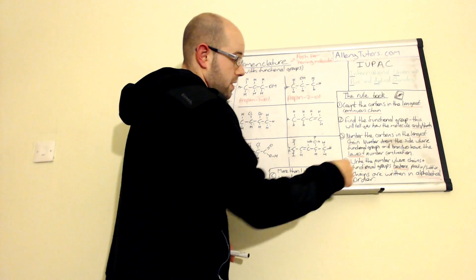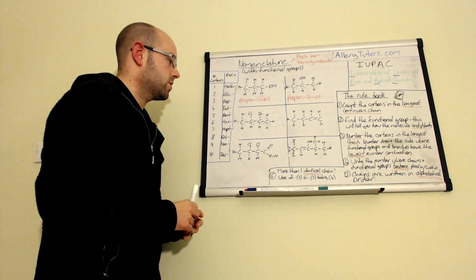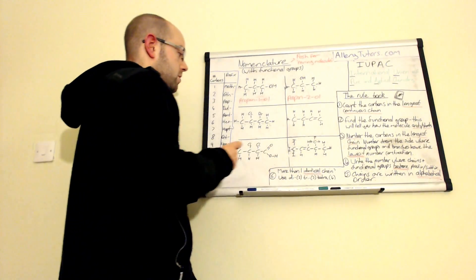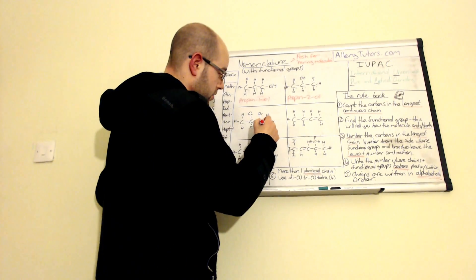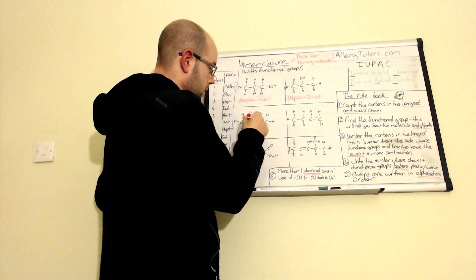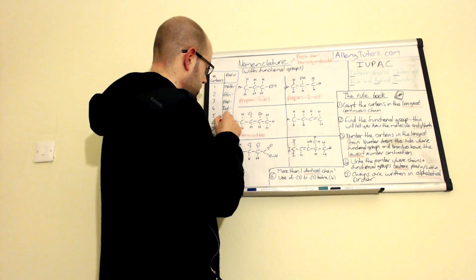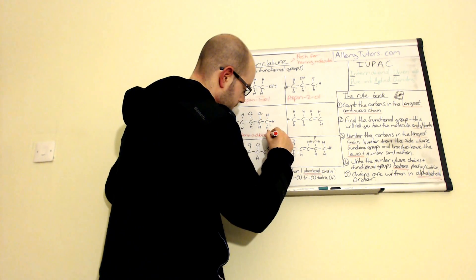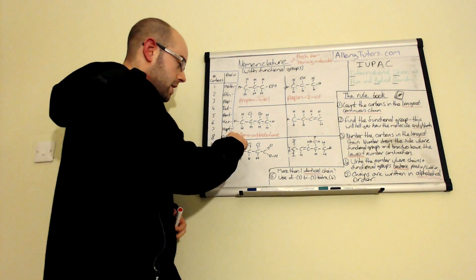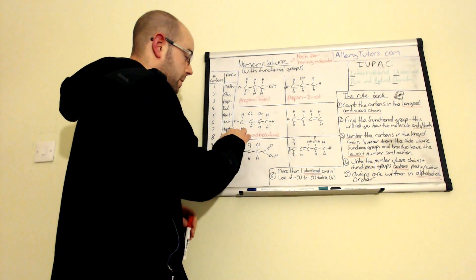The fifth step is that chains and functional groups are written in alphabetical order. We've got chloro and bromo, so we put them in alphabetical order. 'B' comes before 'C', and you never put them in numerical order - it's always alphabetical. So we start with three-bromo, then two-chloro, and then four carbons gives us butane. The name is 3-bromo-2-chlorobutane. It might look odd having three before two, but remember it's alphabetical not numerical.